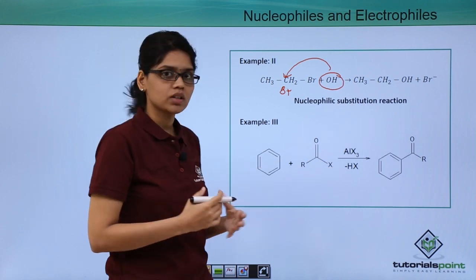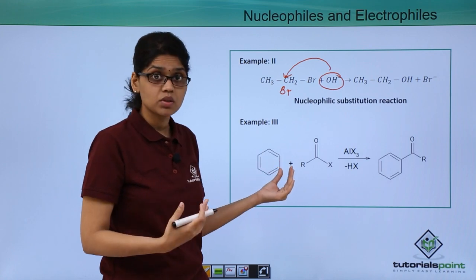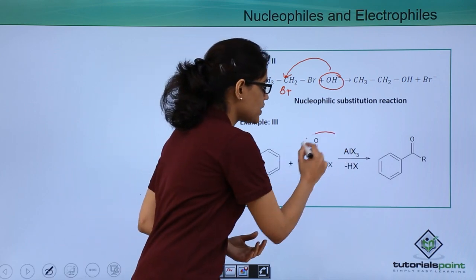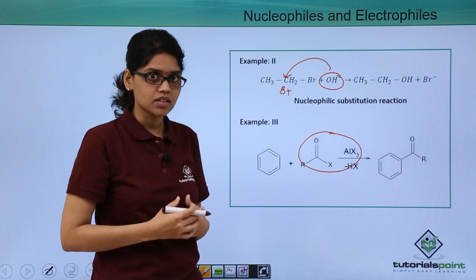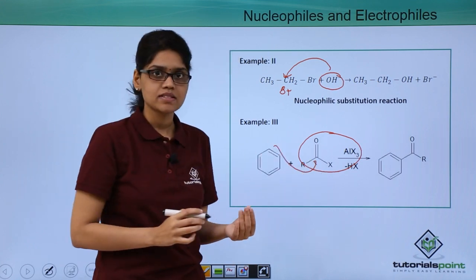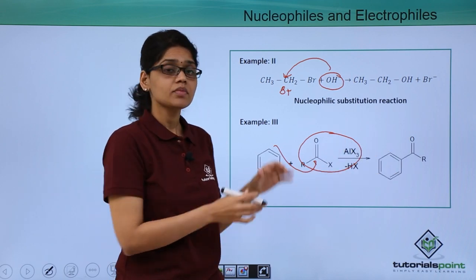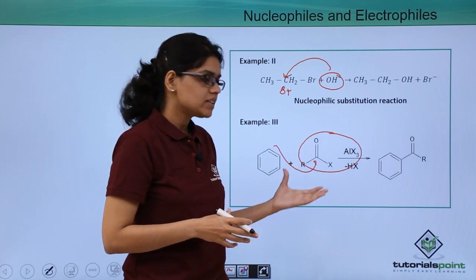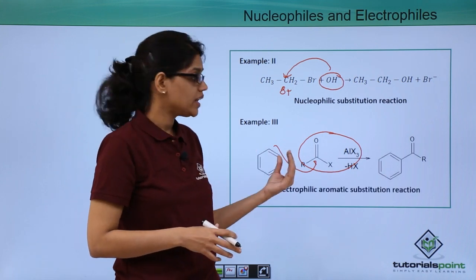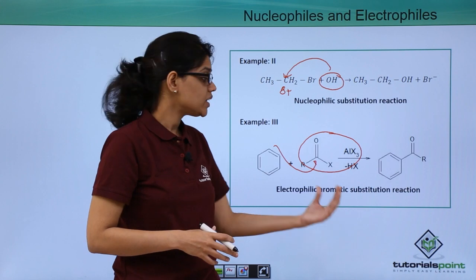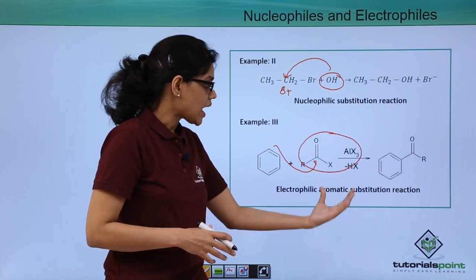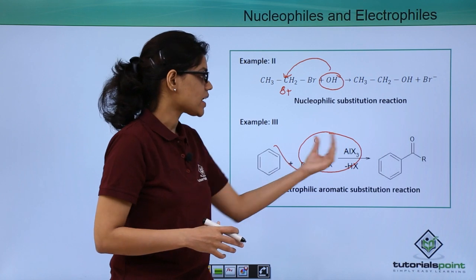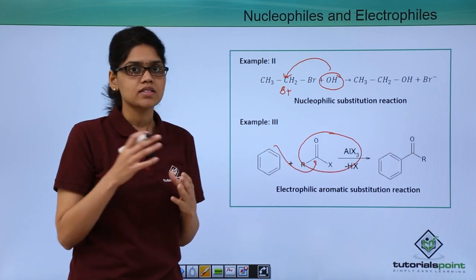Here we have a benzene system which is electron-rich due to the presence of pi bonds. RCOx, an acyl halide, forms a complex with AlCl₃ creating an electrophilic center, and the pi electrons of benzene attack this electrophilic center giving a final product. This is an important reaction called Friedel-Crafts acylation. This is an example of an electrophilic aromatic substitution reaction — electrophilic because an electrophile is involved, aromatic because the aromatic system attacks the electrophile, and substitution because hydrogen is replaced by the RCO⁺ ion.